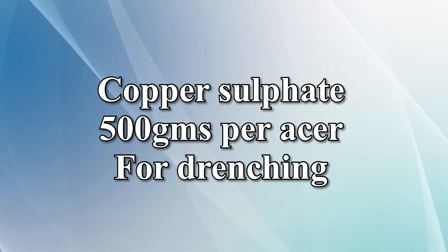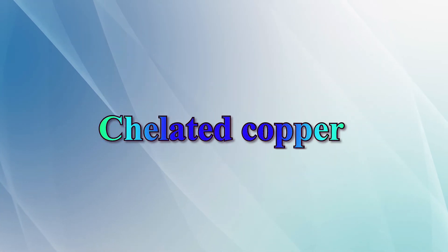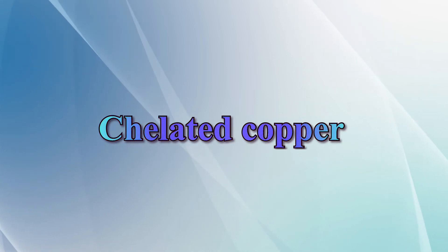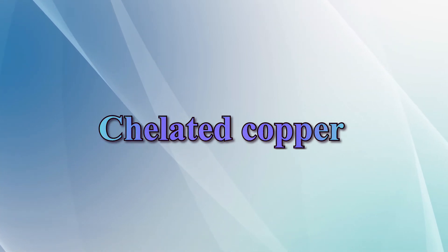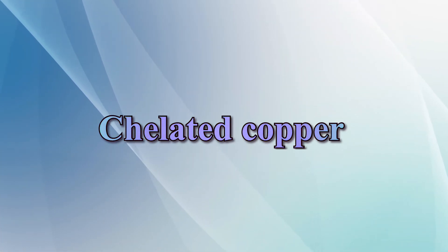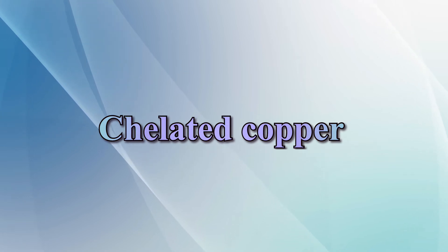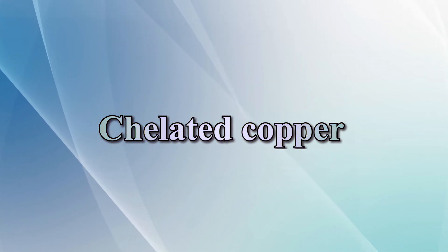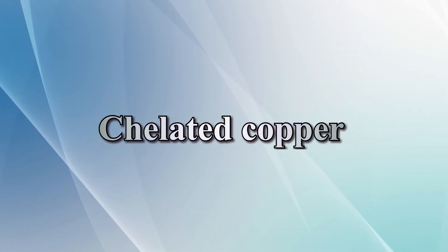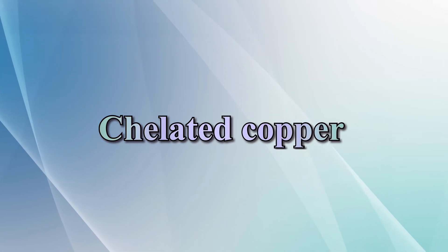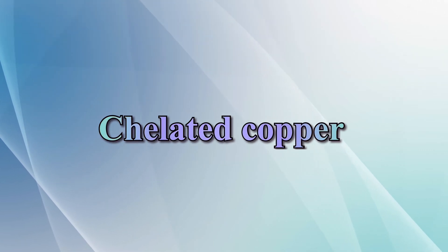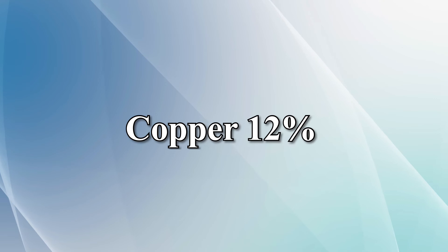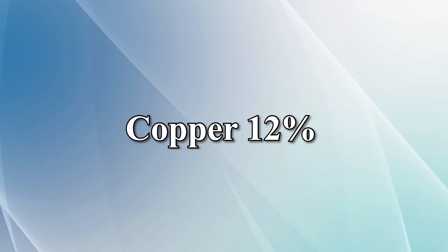Now let's learn about chelated copper. The other formulations of copper are too acidic and cannot be used in spray combinations. Chelated copper, however, can be used in spraying combinations and can be combined with any pesticide. Typically, chelated copper contains 12% copper.